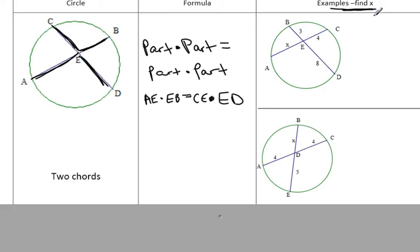So this is the formula, and we'll try it out on the first example. We're going to be finding x. Part times part, so we start with 3 times 8 equals part x times its corresponding part 4. Multiply everything out, 3 times 8 is 24, and 4 times x is 4x. Divide both sides by 4, so x is 6.